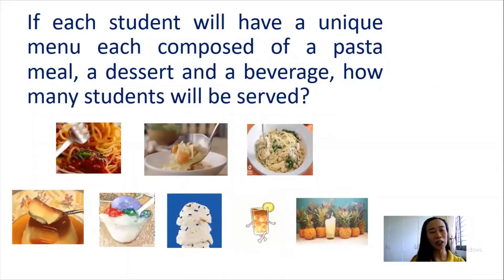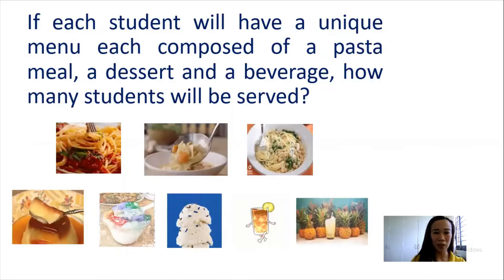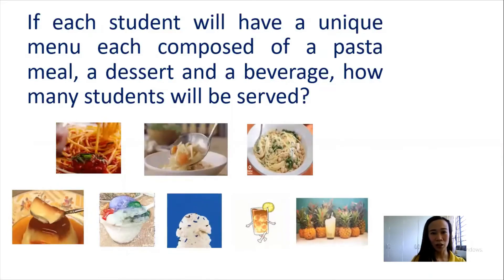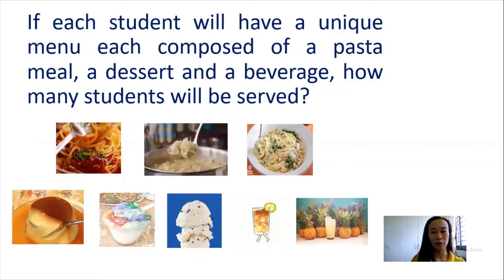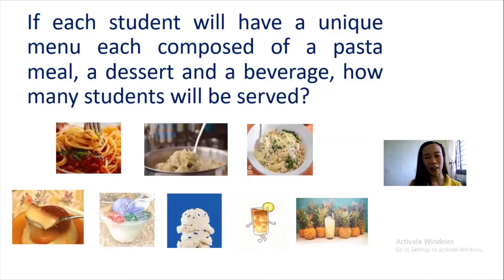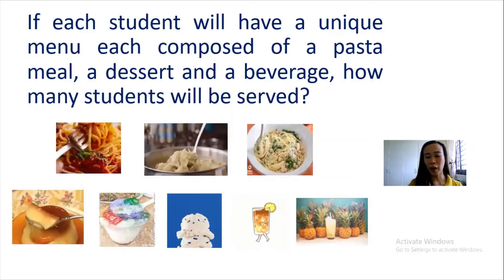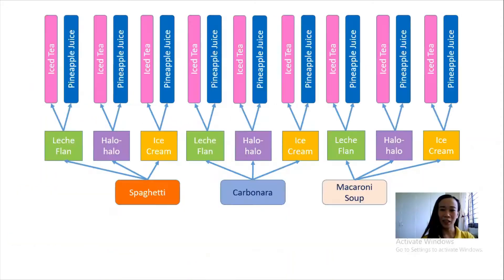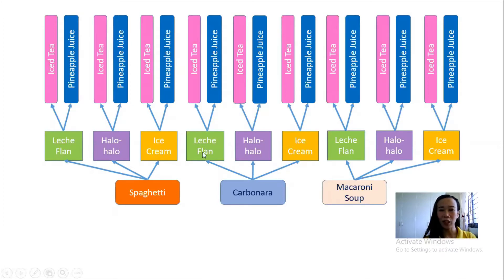If each student will have a unique menu each, composed of a pasta meal, a dessert, and a beverage, how many students will be served? To better understand this, I have prepared a tree diagram. The first layer is spaghetti, carbonara, and macaroni soup. On the second layer, we have the three desserts: leche flan, halo-halo, and ice cream.